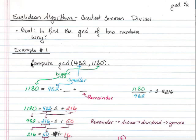So for our example, compute the GCD of 482 and 1180. First, I take the bigger number, whichever one it is, and put it out front here, and I say it equals the smaller number times something plus something, where the plus something is the remainder.